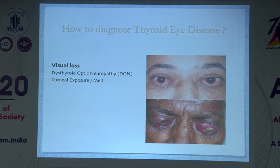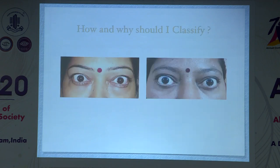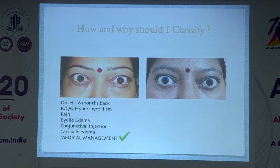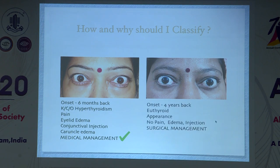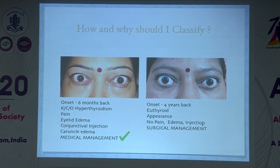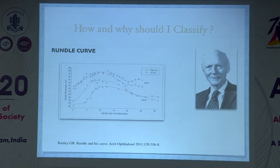If there is gradual severe proptosis along with lack of lagophthalmos and lid lag, corneal exposure may also be seen. Looking at two cases that may appear similar on cursory examination: the patient on the left has a short onset of disease, is a known case of hyperthyroidism, with subjective complaints and objective findings — fitting mostly into medical management. The patient on the right has long-standing proptosis, thyroid-only appearance changes, and no symptoms, making her a candidate for surgical management.